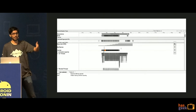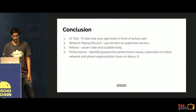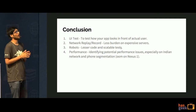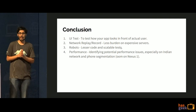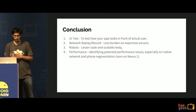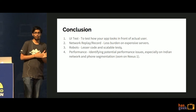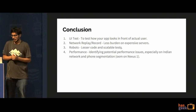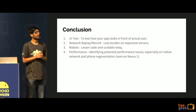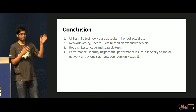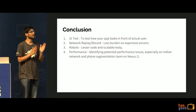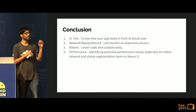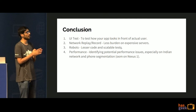In conclusion: use UI tests to identify how your app looks to an actual user; network replay and record is really important as it lessens the burden on expensive servers; use robots to write much less and more scalable test code; and finally use the performance section of Espresso — it's very important because of huge phone segmentation and variable network quality.